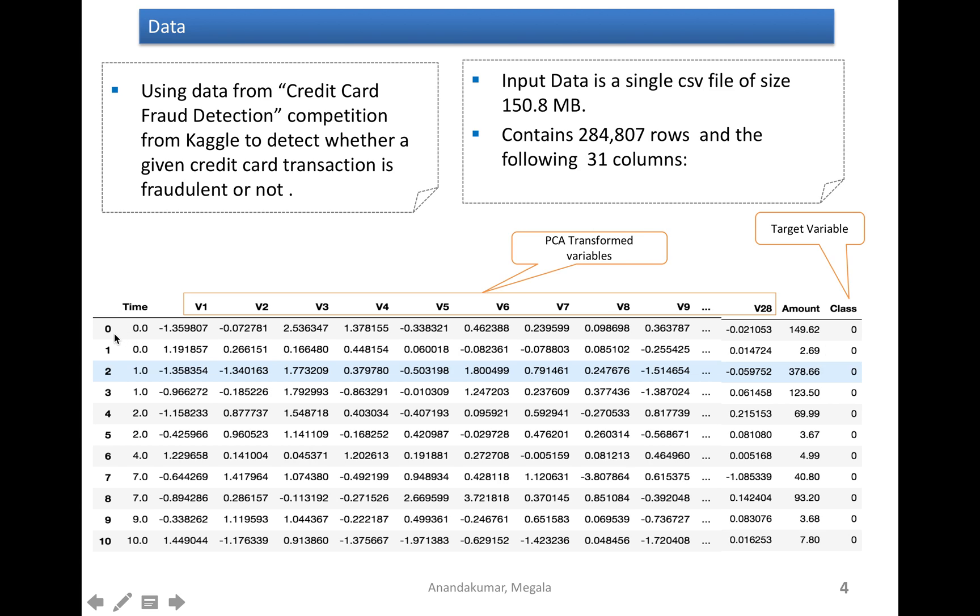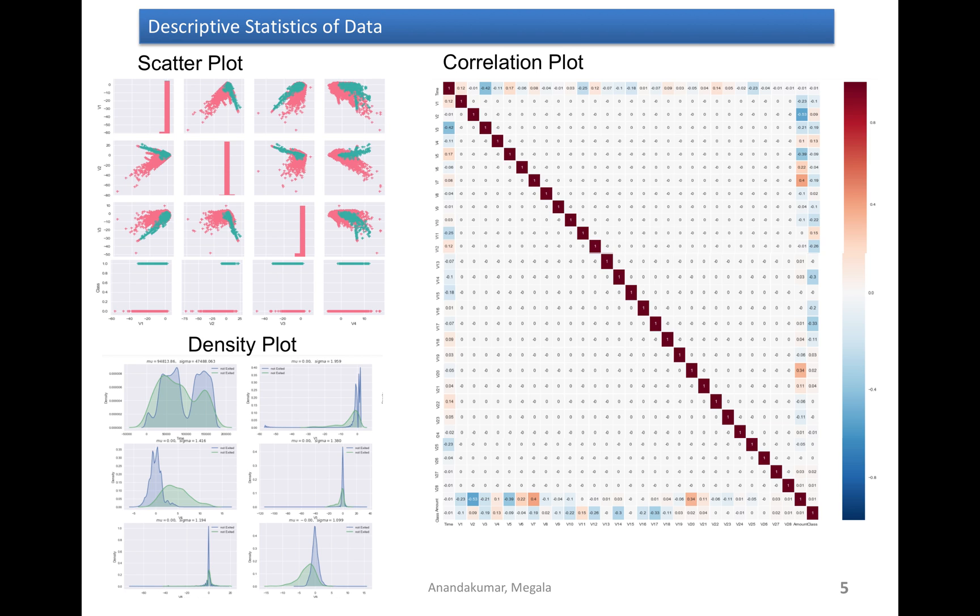In this data, each row indicates the transaction detail. The size of the data is 150 MB. It contains around 284K records.